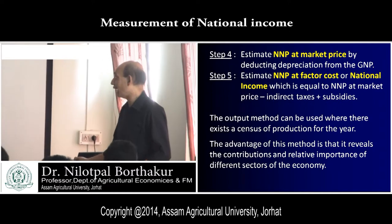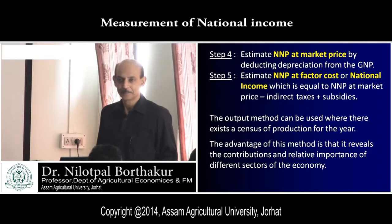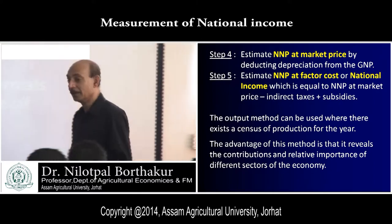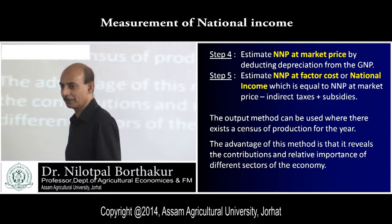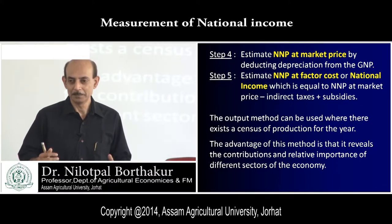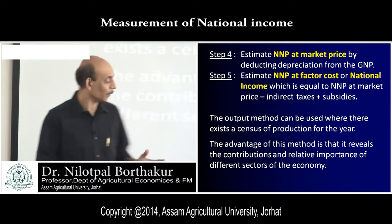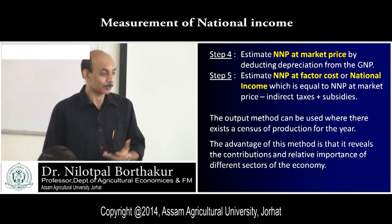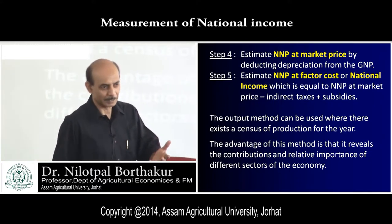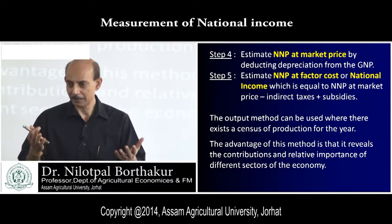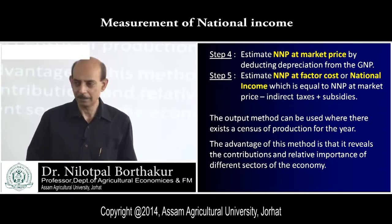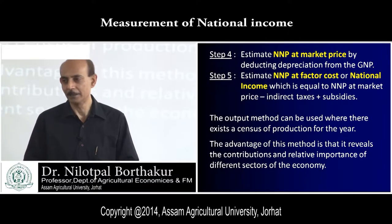Once we estimate NNP at factor cost, that is our national income. This output method can be used where there exists a census of production during a particular year. From the census we know the volume of production from different sectors. Multiplying the volume by market prices gives us GDP first, and then step by step, by adding and deducting certain components, we finally arrive at national income.